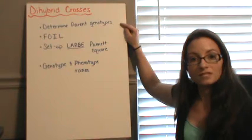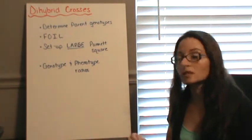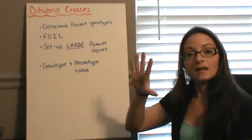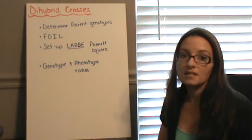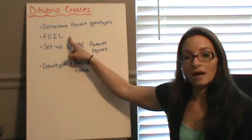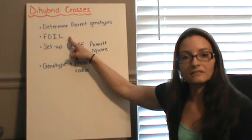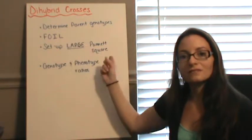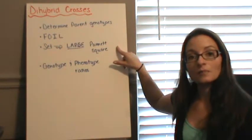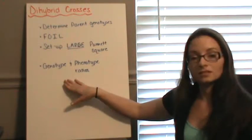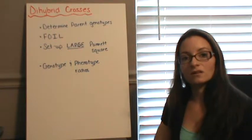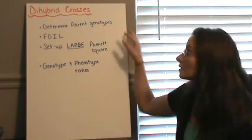The steps in a dihybrid cross are going to be very similar. You need to determine the parent genotypes. The next thing you need to do is determine and set up your Punnett square. With a dihybrid cross, that's a little bit more complicated. I'm going to show you how to do something called FOIL, which many of you have done in your math classes, and reintroduce it here in dihybrid crosses. I'll show you how to set up your large Punnett square, fill it in, and then do the genotype and phenotype ratios. Please review monohybrid crosses again if you need to before jumping into dihybrid crosses.